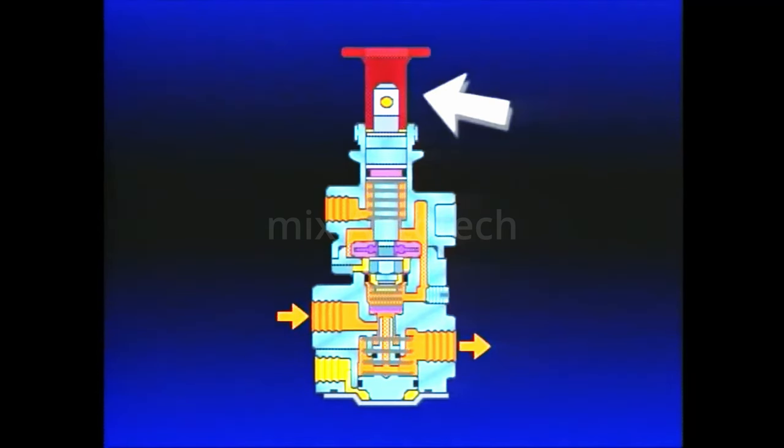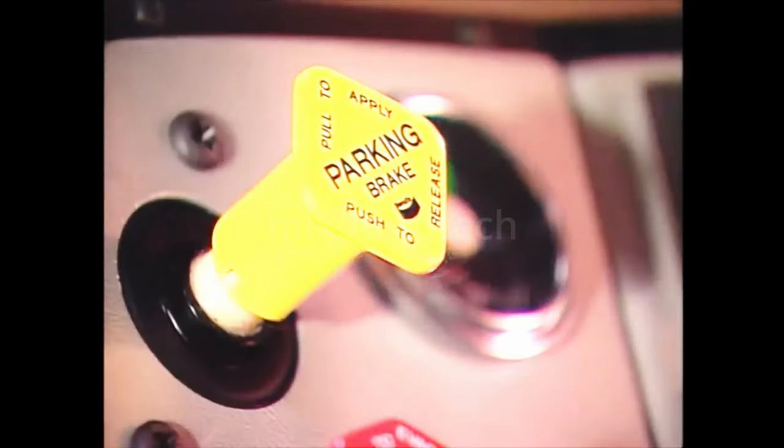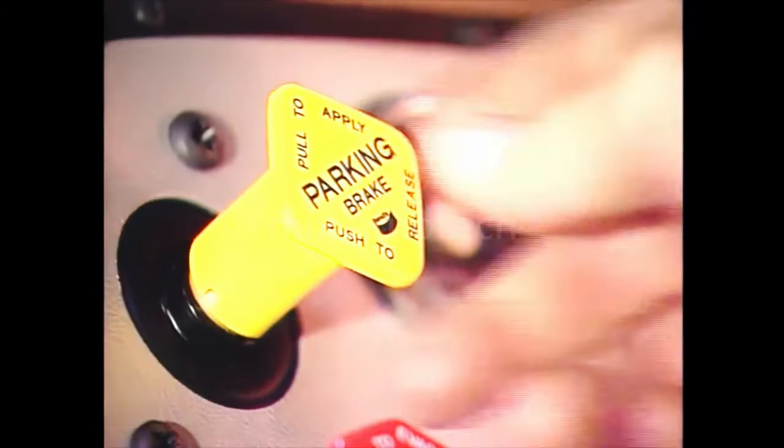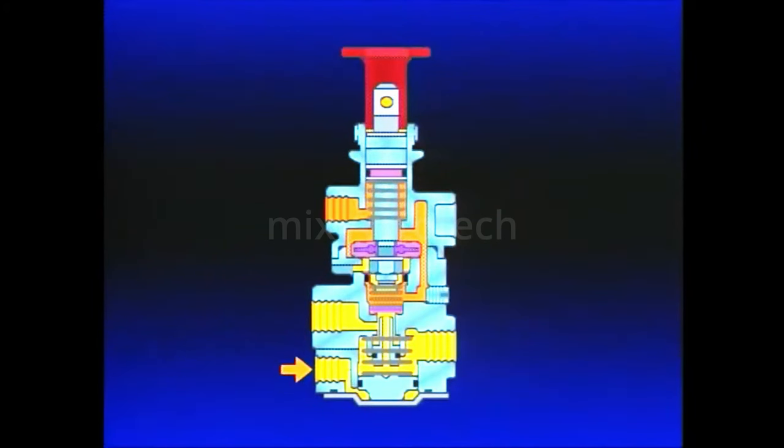Note that the PP7 button remains in. This is due to the PP7 synchro valve exhausting the trailer supply line. Pushing the PP1 park control in releases the tractor parking brakes and delivers air to the PP7 control port. This causes the synchro valve piston to close its exhaust and open the inlet. The trailer supply line is recharged and the trailer parking brakes release.